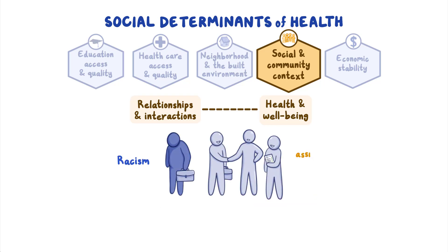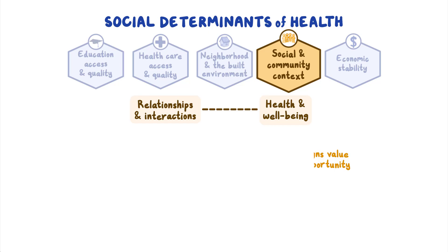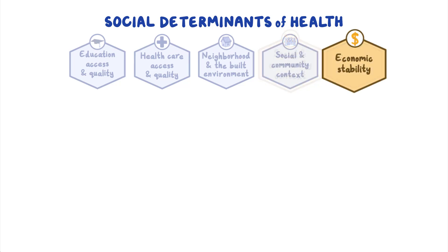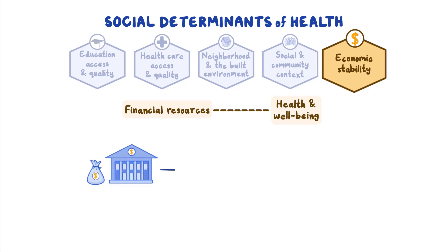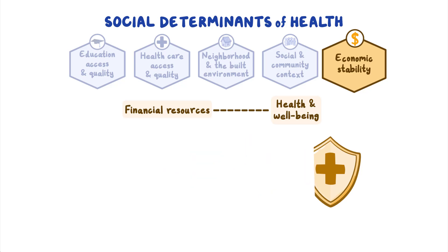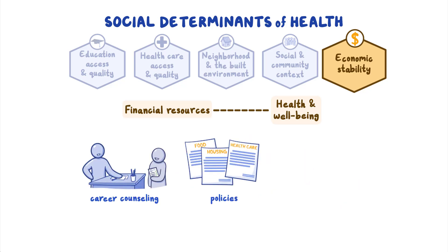Racism is a system that assigns value and determines opportunity based on the way people look or the color of their skin. This gives some people unfair advantages and causes other people to be treated unfairly. Addressing factors contributing to these differences is important for improving overall health and well-being of communities. Economic stability is the connection between financial resources and health. Income and other financial resources greatly affect a person's ability to access healthy food, stable housing, and other needs that influence both physical and mental health. Providing programs such as career counseling and maintaining policies that help people pay for food, housing, and healthcare can help people achieve economic stability.